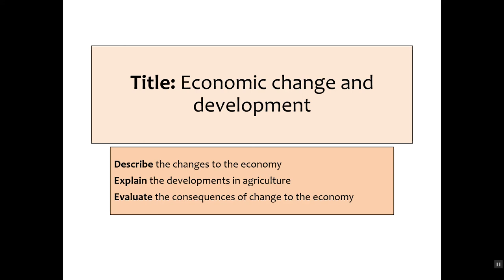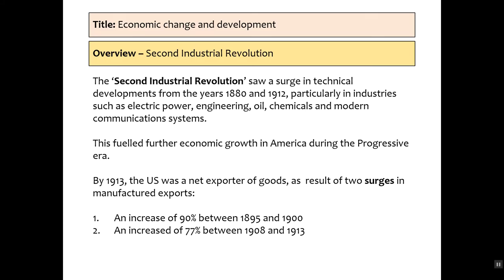Welcome to this video on the economic change and development that took place between 1890 and 1920. We're going to break it down into two parts: 1890 until 1913, and then the impact of World War I. As an overview, we call this period the Second Industrial Revolution. It saw a huge change to America — massive technical developments from the years 1880 until 1920. There were new industries such as electric power, engineering, oil, chemicals, and modern communications, and it really did fuel the economic growth we see in the period we call the Progressive Era.